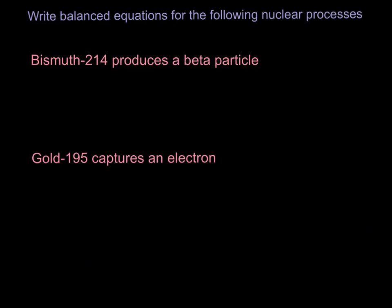All right, so these are some styles of questions that you may see about nuclear reactions. And so we have bismuth-214 produces a beta particle, and we're asked to write a reaction for this. So what we're going to do is start out by filling in what we know, and that is that bismuth is 214. Bismuth has an atomic symbol of Bi, and we know it's producing a beta particle, so that's 0, negative 1, E.